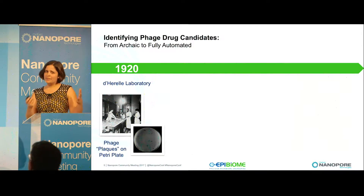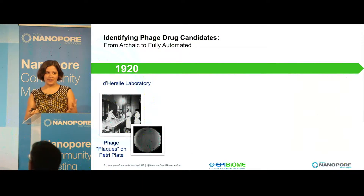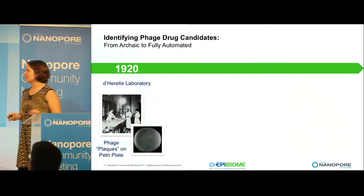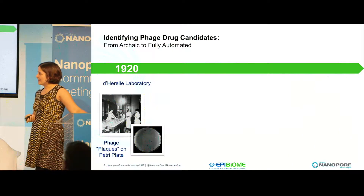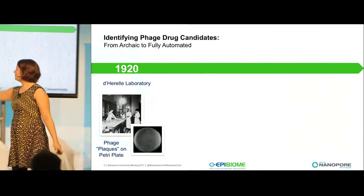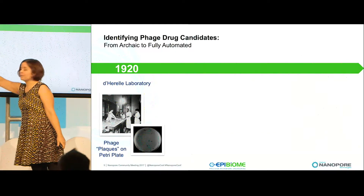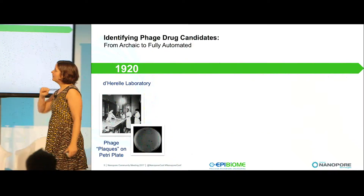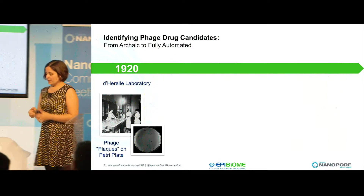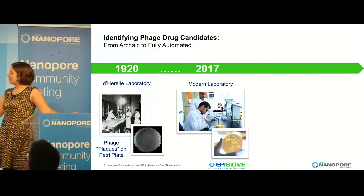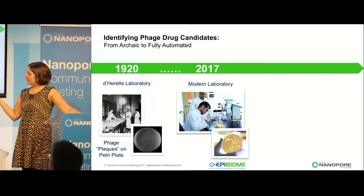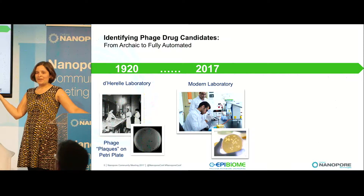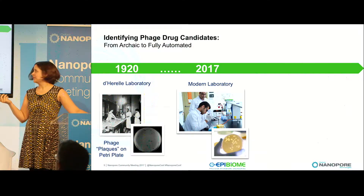Phages have been around for a long time — we've known about them for 100 years. These are pictures of the Durrell Laboratory finding phages. This is a lawn of bacteria, and these are phage plaques on it. They've been around, and if you look now there are still people working on it, but basically they're doing the same thing. The only difference is the pictures are now in color.